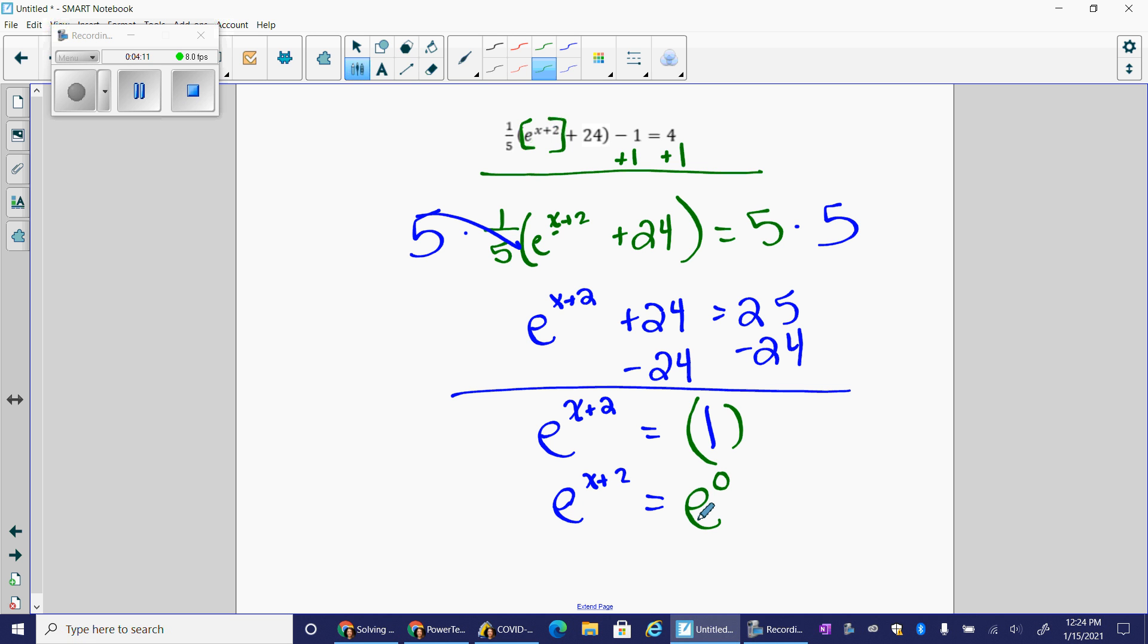The one-to-one property says if the bases are the same, both of these bases are e, then the exponents have to be equal. So instead of writing one, I wrote e to the zero power. E to the zero power equals one. And now I know that x plus two has to equal zero.